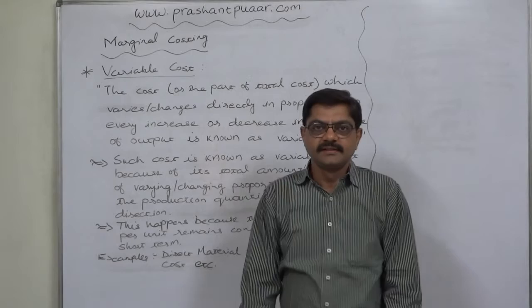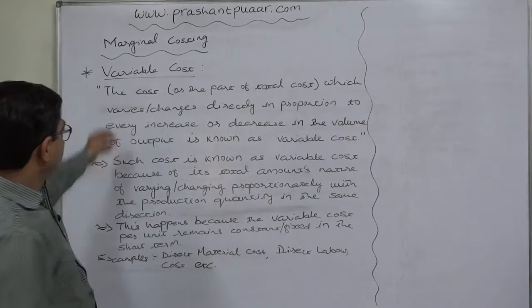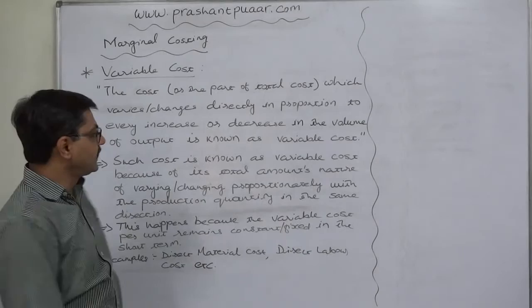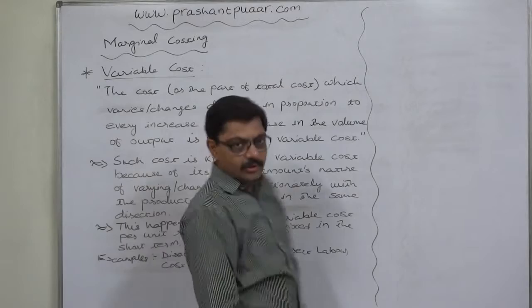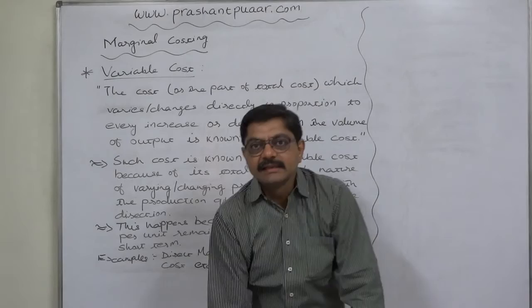Welcome friends, namaskar. In this lecture we are going to discuss the concept of variable cost in brief. The cost, or the part of total cost which varies or changes directly in proportion to every increase or decrease in the volume of output or production quantity, is known as variable cost. That means the part of total cost which varies according to the variation in production quantity in the same proportion is known as variable cost.